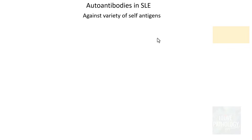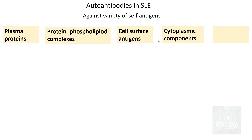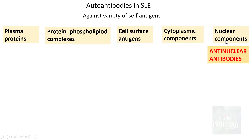Now let's talk about autoantibodies in SLE. These autoantibodies are developed against a variety of self-antigens, which can be categorized as plasma proteins, protein-phospholipid complexes, cell surface antigens, cytoplasmic components, or nuclear components. Antibodies to nuclear components are the most important and are called anti-nuclear antibodies — the most common and important antibodies found in SLE.